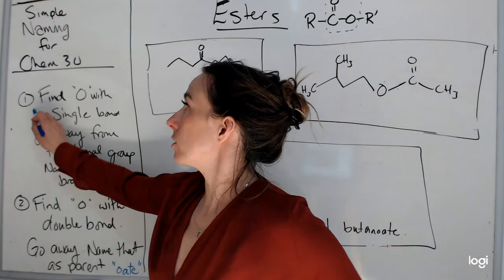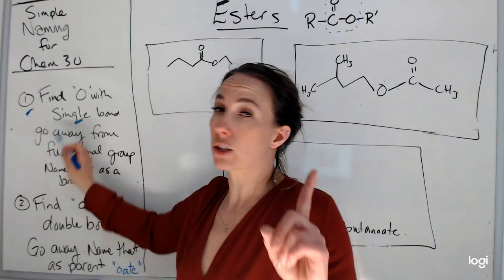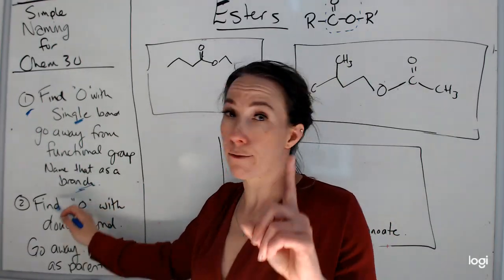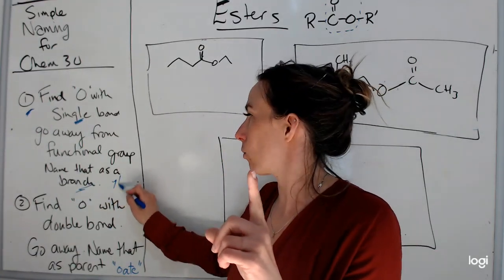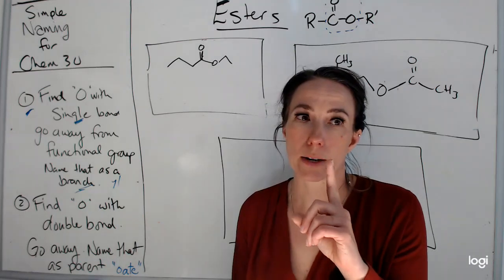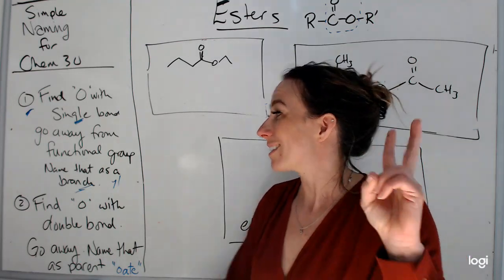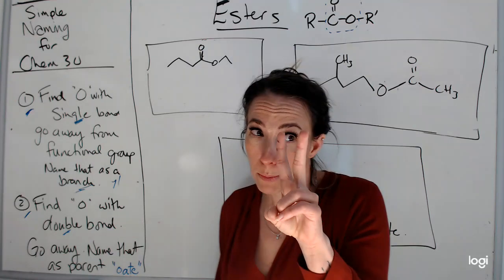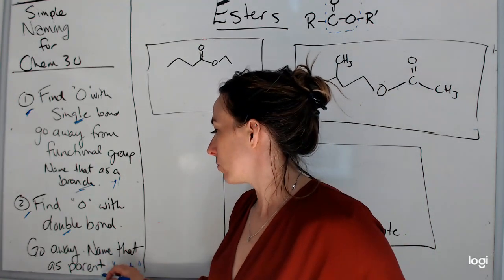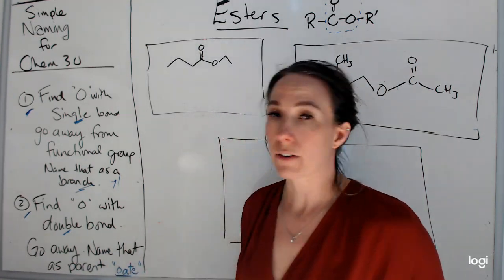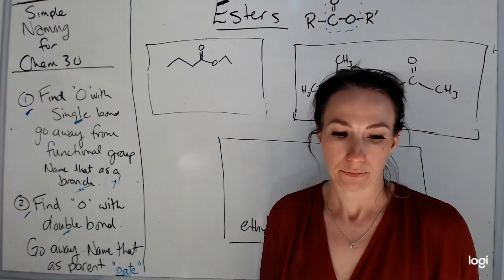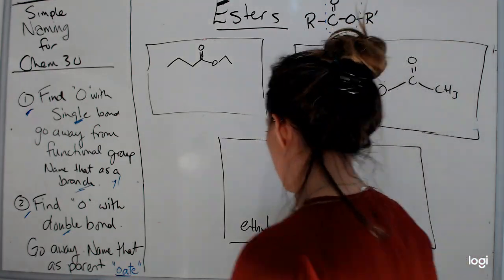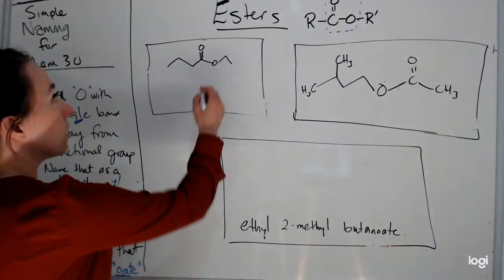The first step is to find the oxygen with a single bond and name that part first as the branch — that's the 'yl' part we've been naming all along. The second step is to find the oxygen with the double bond and name that as the parent chain with the 'oate' ending.